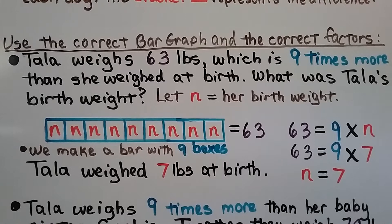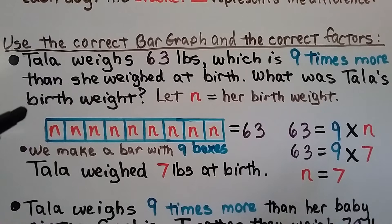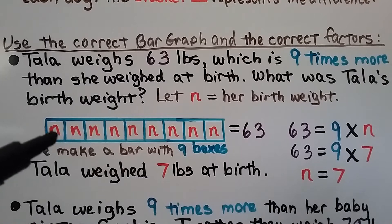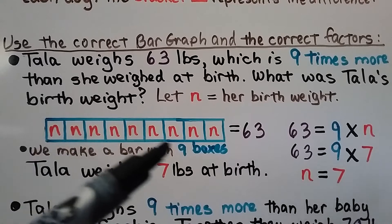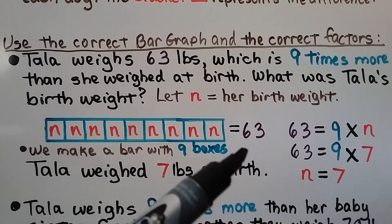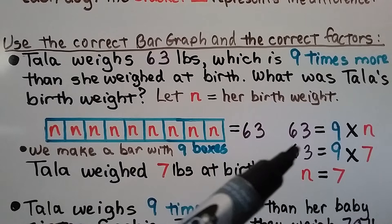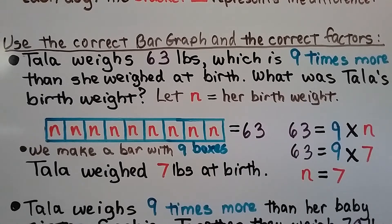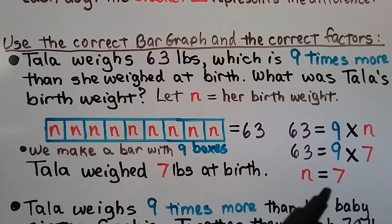We need to make sure we're using the correct bar model. For this multiplication problem: Tala weighs 63 pounds, which is nine times more than she weighed at birth — what was Tala's birth weight? Her birth weight is n. She weighs 63 pounds, which is nine times more, so we make nine boxes equaling 63. That gives us 63 equals nine times n. Since nine times seven equals 63, Tala weighed seven pounds at birth.